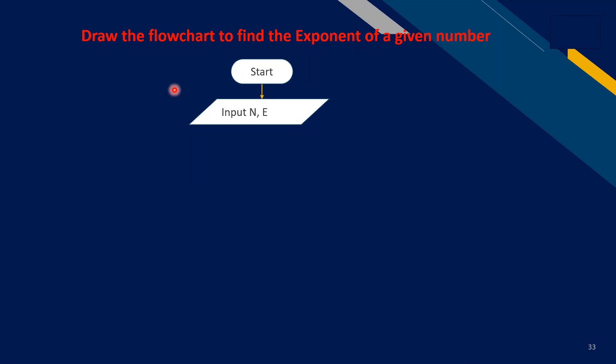Draw the flowchart to find the exponent of a given number. Exponent of a given number means the number will be multiplied with their powers. Input n is the number and e is used for the exponent.